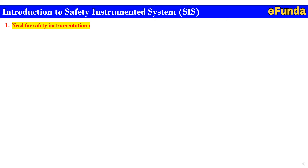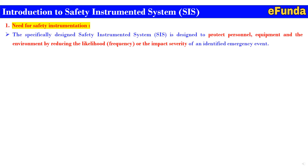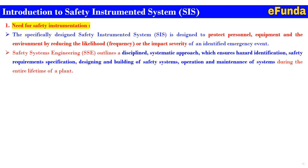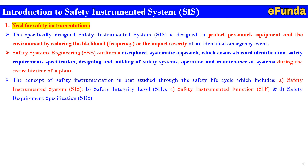Moving on to the need for safety instrumentation: the specifically designed SIS is designed to protect personnel, equipment, and the environment by reducing the likelihood (frequency) or impact (severity) of an identified emergency event. A safety instrumented system engineering approach outlines a disciplined, systematic approach which ensures hazard identification, safety requirement specification, designing and building of the safety system, and operation and maintenance of the system during the entire lifetime of a plant — that is, the safety life cycle.